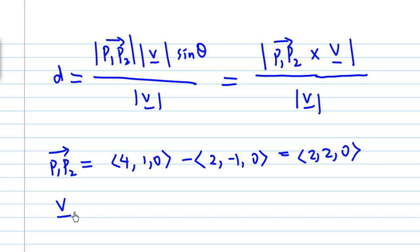And V is (-1, 2, 3). So let's try to find the cross product of P1P2 cross V. P1P2 cross V is equal to the determinant of i, j, k; P1P2 is (2, 2, 0); V is (-1, 2, 3).